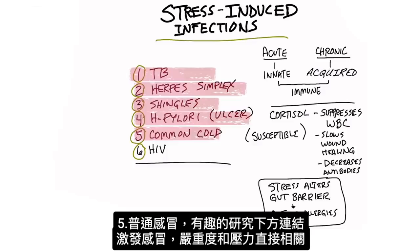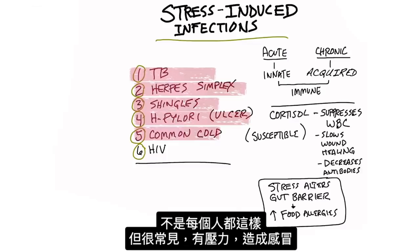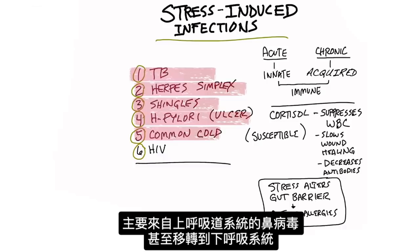And then the common cold. There's an interesting study, which I'll put down below, that the activation of a cold and its severity is directly related to the proportion of stress a person goes through. Not everyone who gets stress gets a cold, but it's very common. It mostly comes from a rhinovirus, which affects the upper respiratory system and can even move to the lower respiratory system.